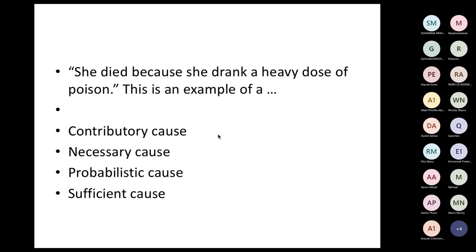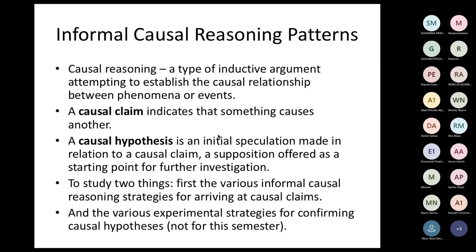Exercise: She died because she drank a heavy dose of poison. A heavy dose of poison is sufficient for death, so this would be a sufficient cause. That covers the different senses of the word cause — the different meanings and ways in which we can have a cause. Now let's look at the different ways in which we human beings identify causes every day. The human mind has certain natural ways of identifying causes — we call them the informal causal reasoning patterns.